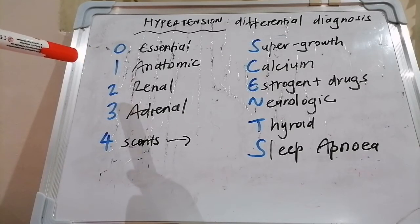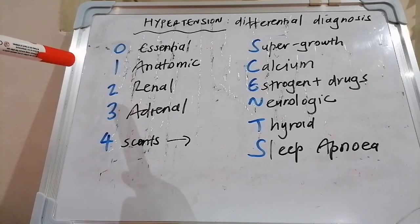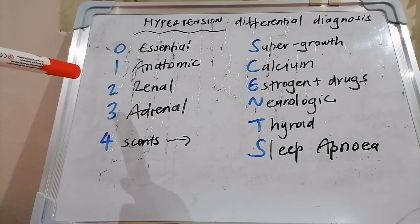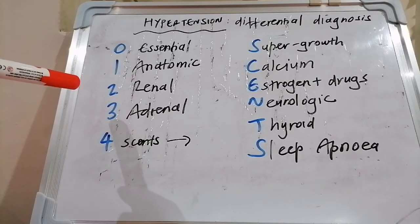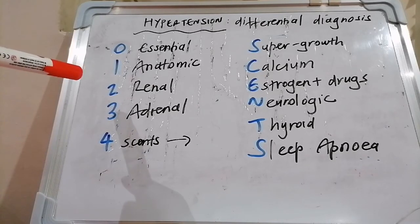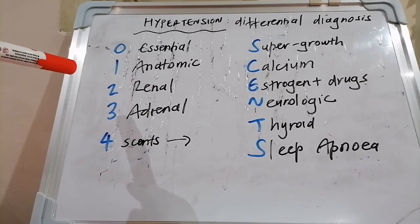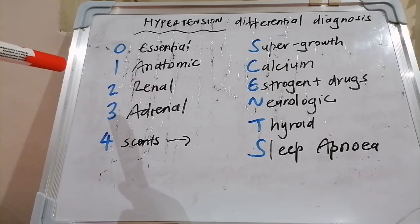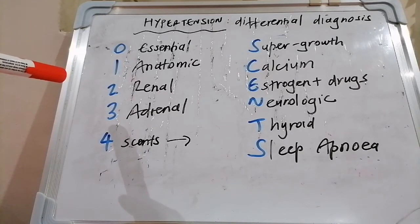Renal causes include renal parenchymal disease in the context of chronic renal failure. We should talk about cause or effect, because chronic renal failure can cause hypertension but hypertension can also cause chronic renal failure — so it's the chicken or the egg. Also polycystic kidney disease, especially the autosomal dominant form, and renal artery stenosis.